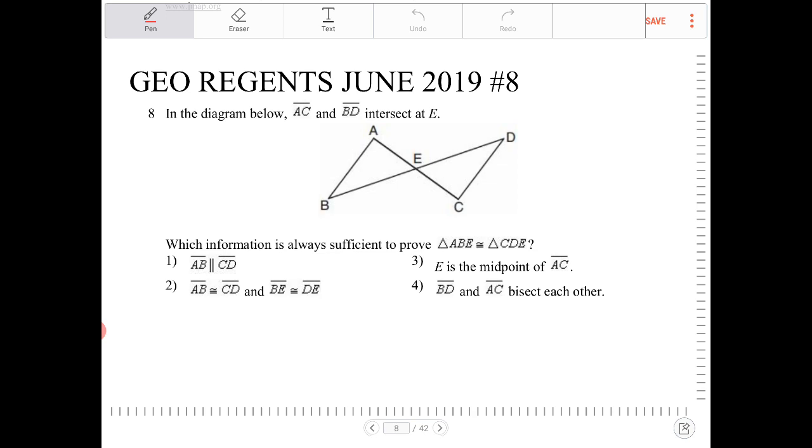Okay, so if we're trying to prove that two triangles are the same, we need at minimum one side. So let's just recap what are all the different ways that we can prove triangles congruent. We can do side, side, side. So we need three sides for this.